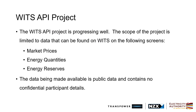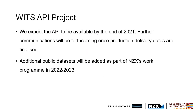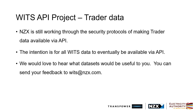The WITS API project kicked off in February of this year and is progressing well. The scope of the project is limited to the data that can be found on market prices, energy quantities, and energy reserves screens. The data being made available is public data and contains no confidential participant details. We are currently tracking to timelines and expect the API to be available by the end of 2021. Additional public data sets will be added as part of NZX's overall work program in 2022–2023. NZX is still working through the complexities of making trader data available via API, but the intention is that all data available on WITS will eventually be available via API. We would be interested in your feedback on data sets that would be useful to you — send that to WITS@NZX.com.